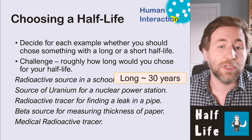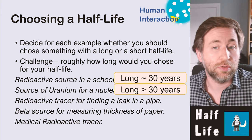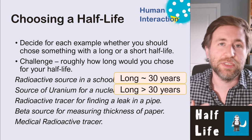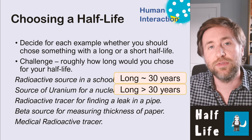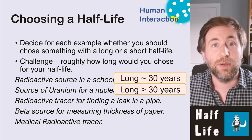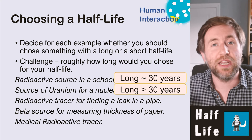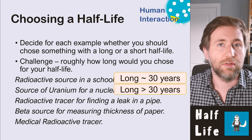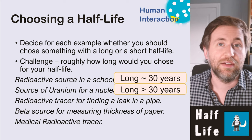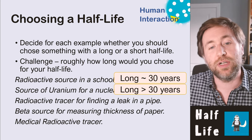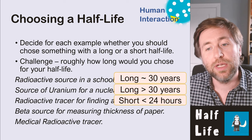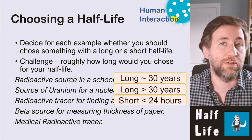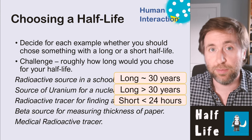For fuel in a nuclear power station like uranium, you'd want a long half-life — at least 30 years — because a nuclear power station lasts about 60 years and you want enough fuel for its lifetime. A radioactive tracer for finding a leak in a pipe should have a short half-life: you just want to find the leak and then have it stop being radioactive quickly so you can carry on using that pipe or machinery.